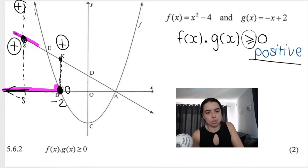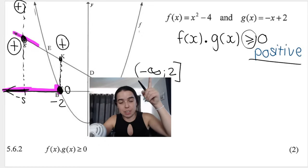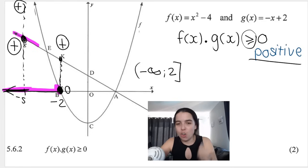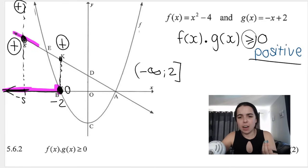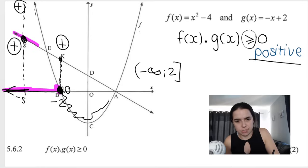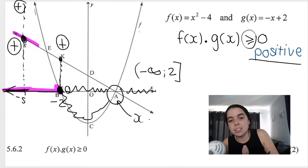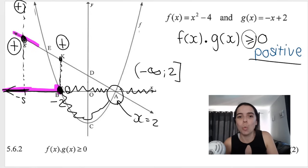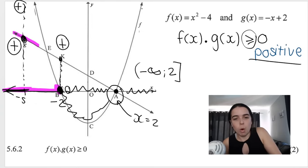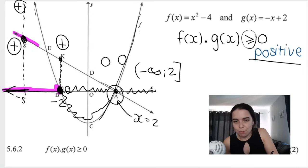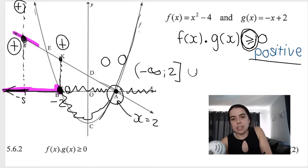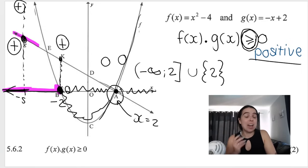So from x = negative infinity all the way to x = −2, both functions are above the x-axis and the product is positive. Between −2 and 2 the parabola is below the x-axis, so the product is negative — doesn't work. However, at x = 2, both functions equal zero, so the product is zero, which satisfies ≥ 0. Therefore the answer is x ≤ −2, union with the single point {2}. We give one mark for the first part and one mark for the second part of the answer.